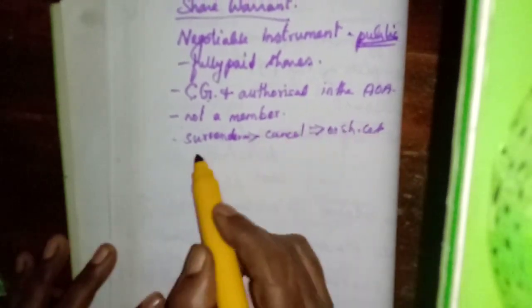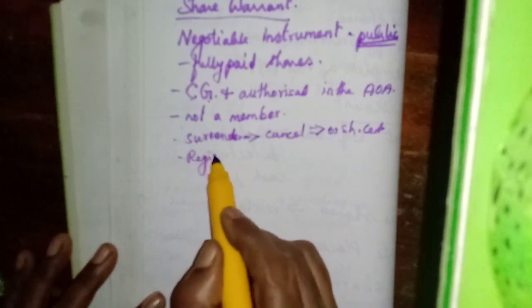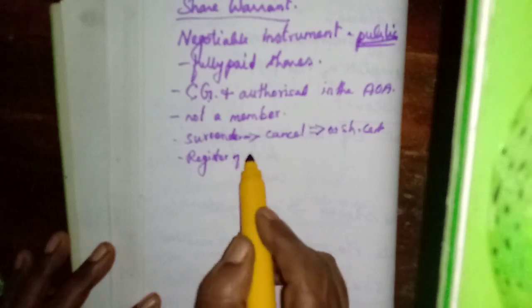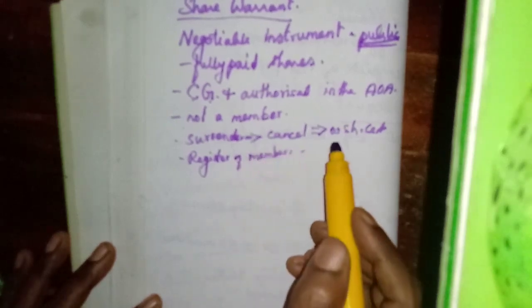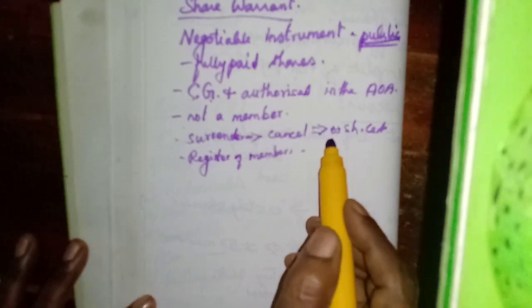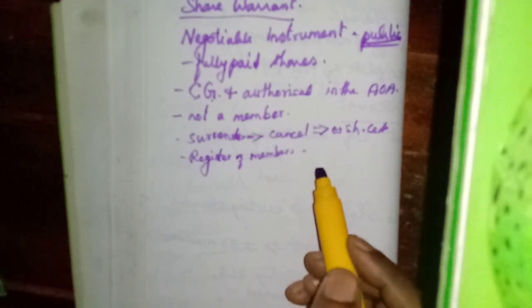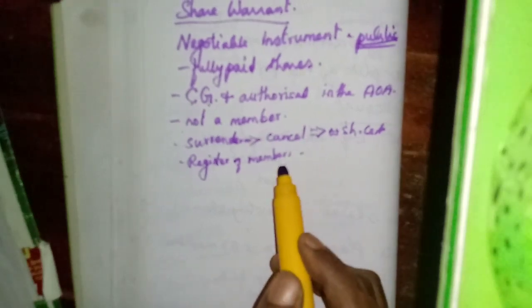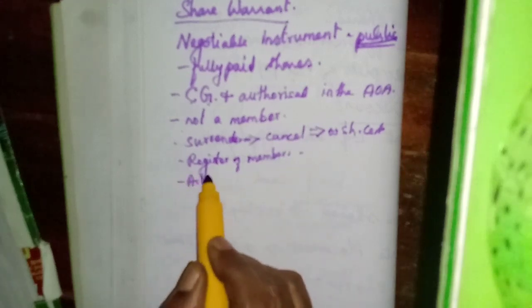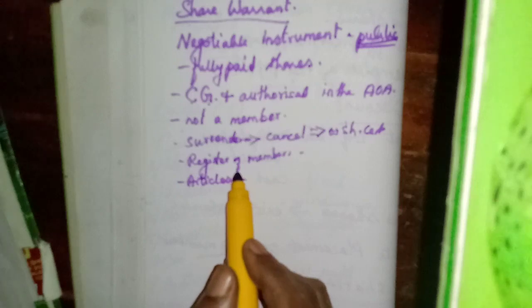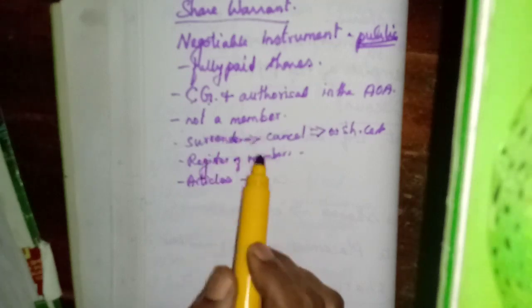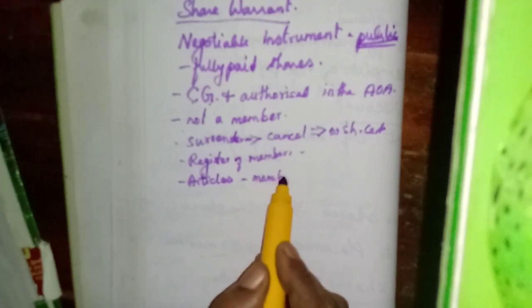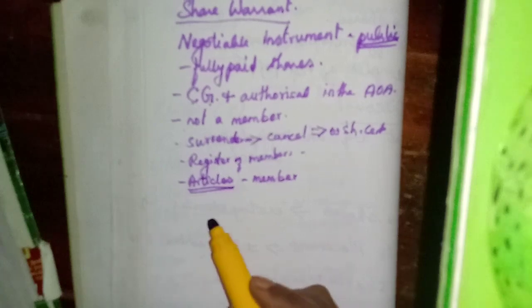The company will enter his name in the register of members. If his name is entered in the register of members, then he will become a member of the company. The holder of a share warrant is not yet a member. However, if the articles provide for it, the holder of a share warrant can also become a member of the company — but it must be authorized in the articles of association.